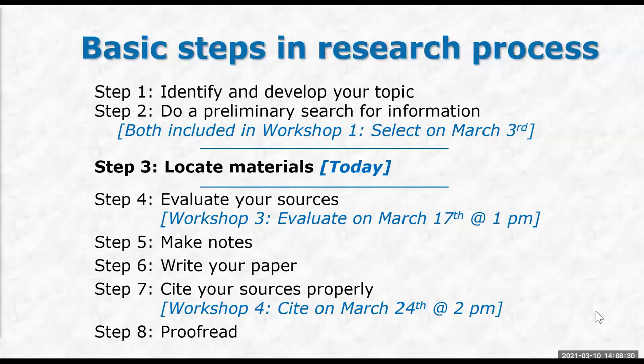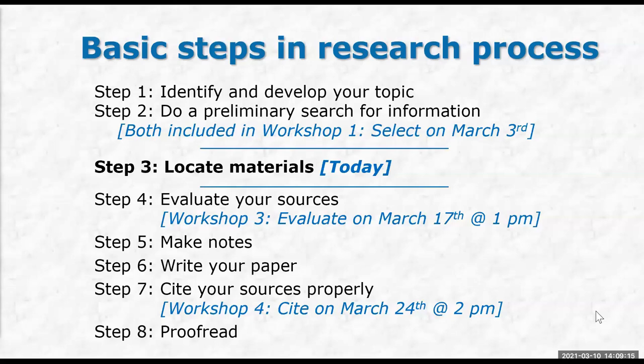The next workshop will be on evaluating resources. Sometimes your resources don't come from databases — sometimes they come from books or the internet. I'm going to give you tools on how to effectively get credible and reliable resources that are academically oriented. Steps five, six, and seven involve making notes, writing your paper, and citations — including the two major citation formats, some plagiarism awareness, in-text citations, and your reference or works-cited page. We'll also talk about paraphrasing and summarizing. That will be on the 24th.